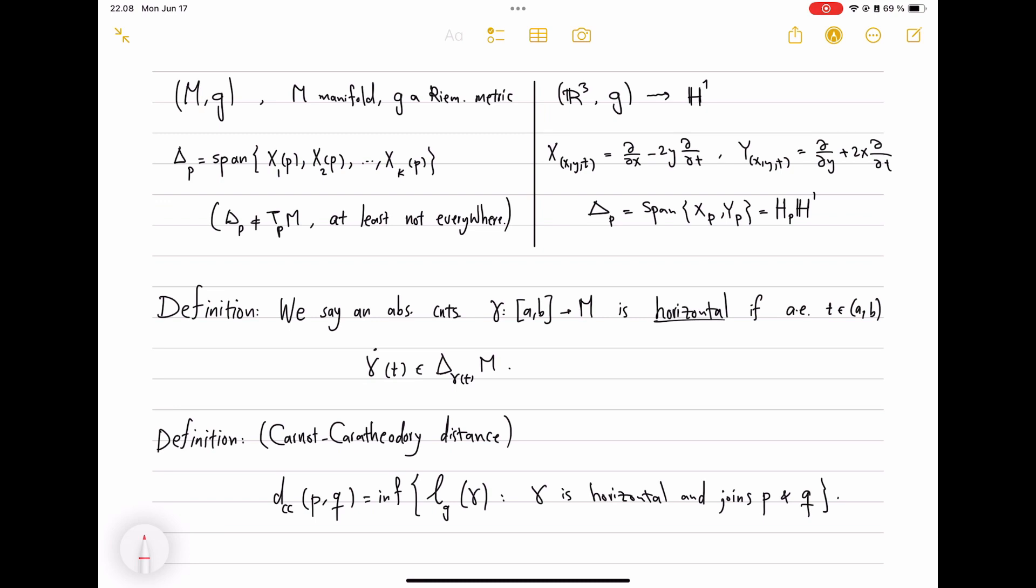the curves are restricted to having velocities only lying in a proper subspace of the tangent space. So if you take any random curve between two points, it may not be admissible for what we're going to do. Because the Carnot-Carathéodory distance between points will be the length of only those curves that are horizontal and join two points.